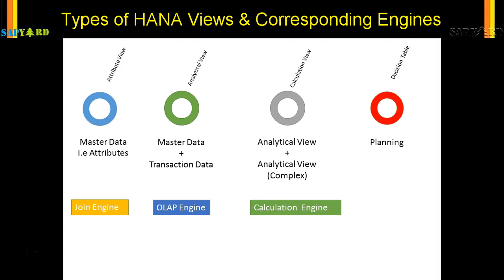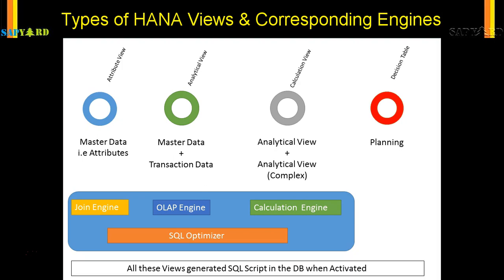That is the beauty of the HANA models — we do not need to worry. The SQL optimizer of the HANA database does all those calculations for us and determines the best engine to be used. Whenever these views are generated in the backend, the SQL scripts are written in the database layer whenever you activate the models. So without any technical, programming, or SQL knowledge, you just create a bunch of SQL queries which can run in the database, perform very fast calculations, and give you the desired result.